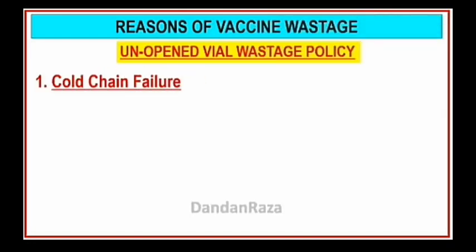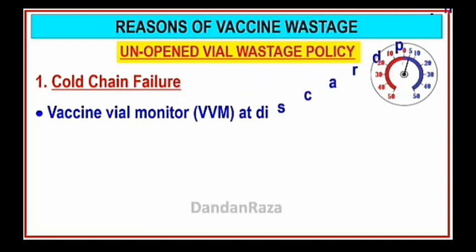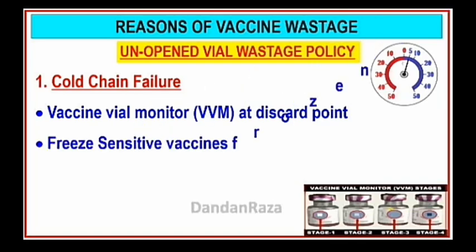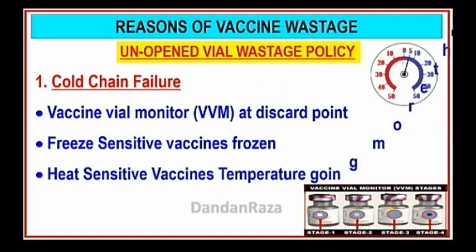Cold chain failure — what is cold chain failure? The vaccine vial monitor (VVM) is used as a discard point. The VVM has four stages: stage one, two, three, and four. Freeze-sensitive vaccines and heat-sensitive vaccines are affected when temperature goes above plus eight degrees centigrade.